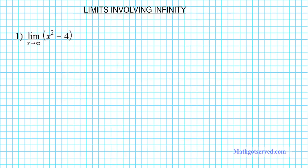Let's take a look at question number one. We are to find the limit as x approaches infinity of the quantity x squared minus 4. This can simply be computed using a substitution. So let's go ahead and substitute infinity into this quantity — this becomes infinity squared minus 4.